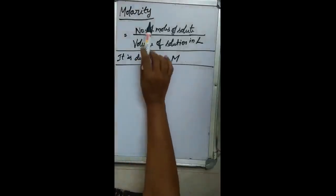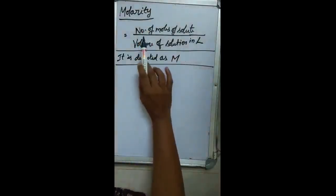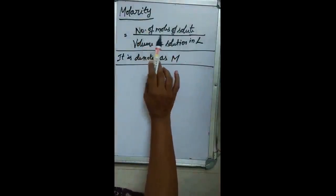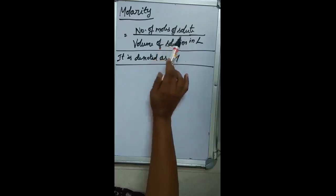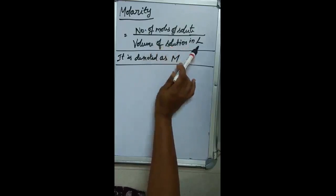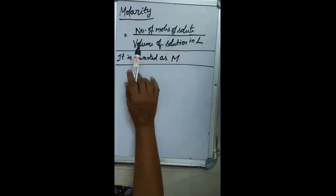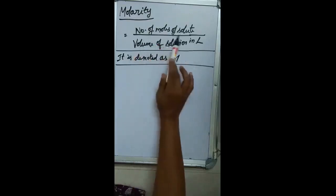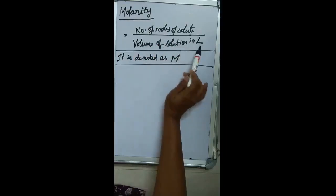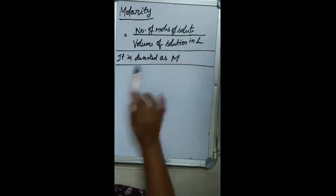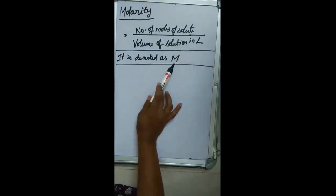Next concentration term is molarity. Molarity is defined as the number of moles of solute dissolved in 1 litre of solution, also written as 1 dm³. Formula: molarity = number of moles of solute / volume of solution in litres. It is denoted by capital letter M.